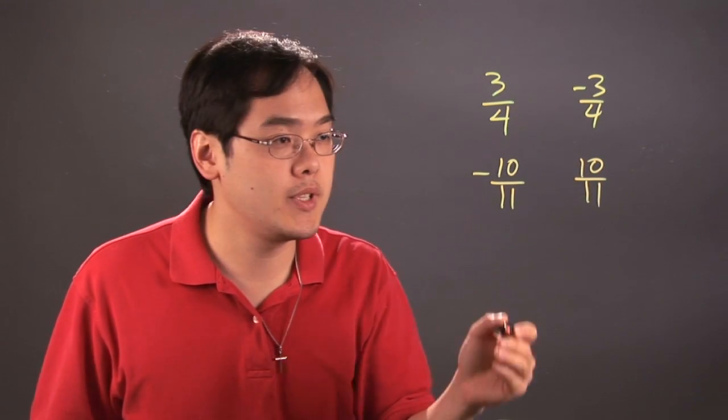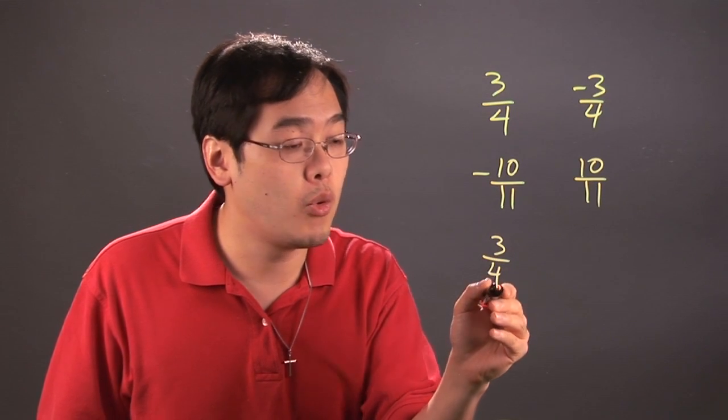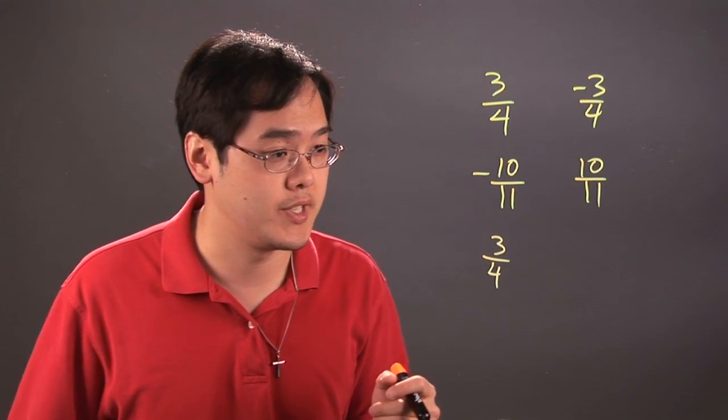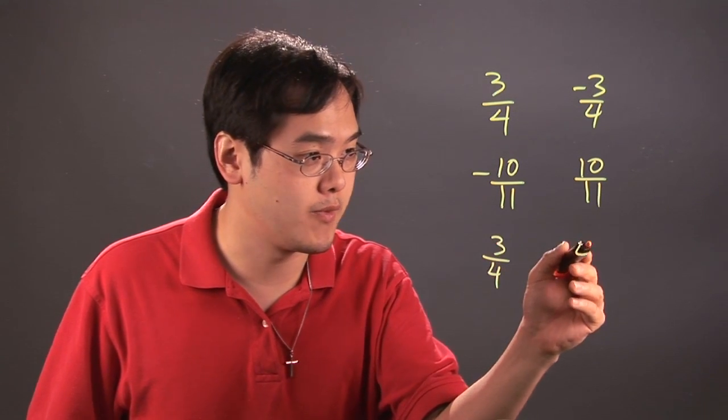When it comes to multiplication opposites, let's say you have 3 fourths, then more often than not you're referring to the reciprocal, the flip of the fraction itself. So the reciprocal of 3 fourths would be you flip the 3 and the 4, it becomes 4 thirds.